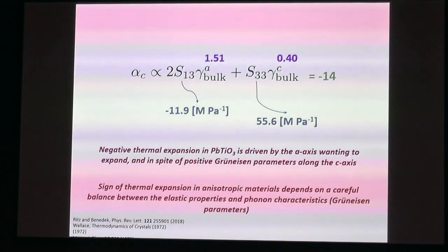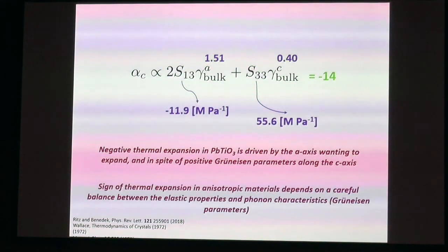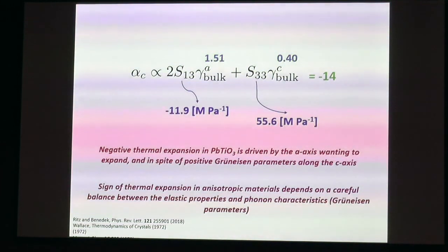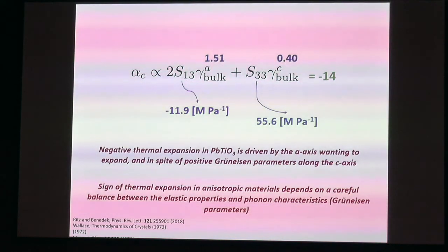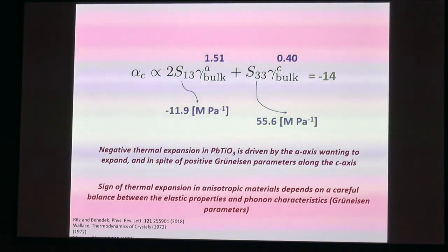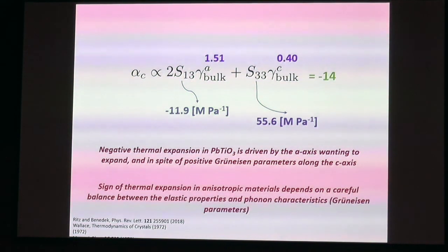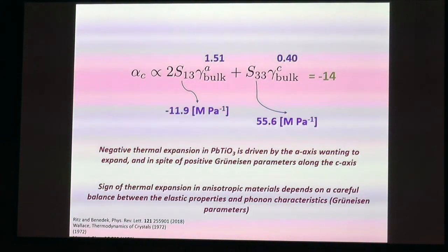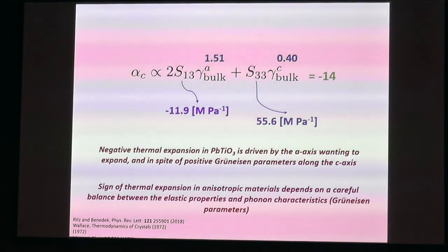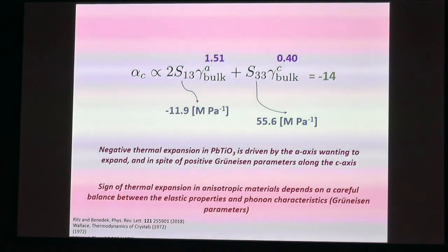The interpretation is that NTE is not being driven by the axis that's actually shrinking. It's being driven by the positive thermal expansion of the A-axis. Because there's a very strong elastic coupling between the A and C axes, C is pulled down for the ride, and the net effect is volumetric negative thermal expansion. If the S₁₃·γ_A product had been positive, or even slightly less negative, it would be energetically favorable for the C-axis to expand instead—there is a reasonably delicate balance here.